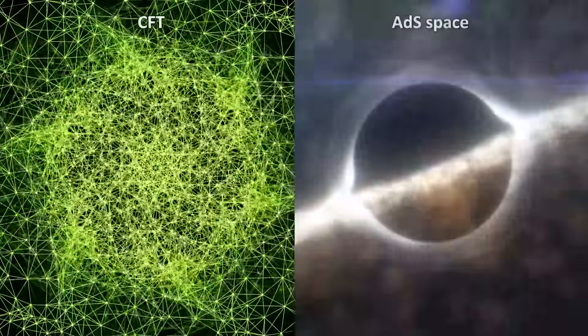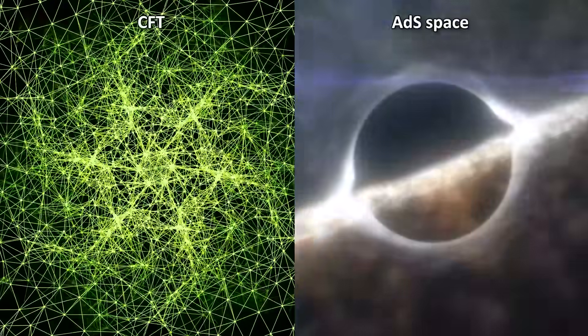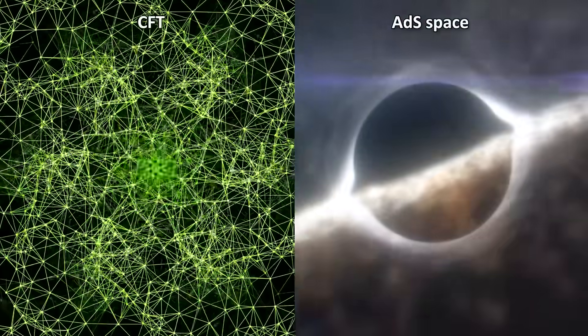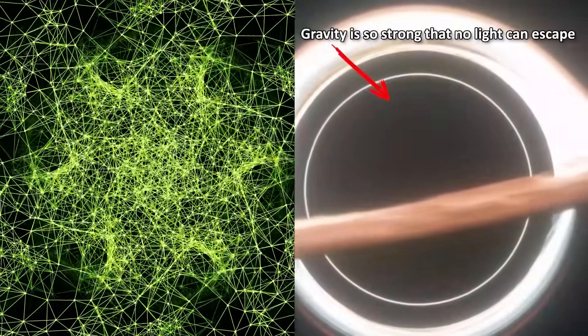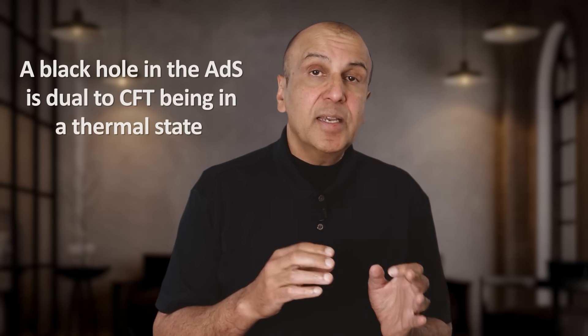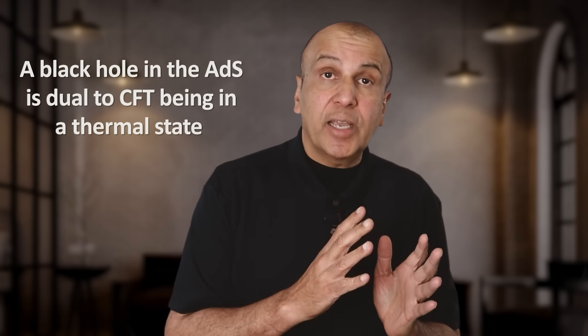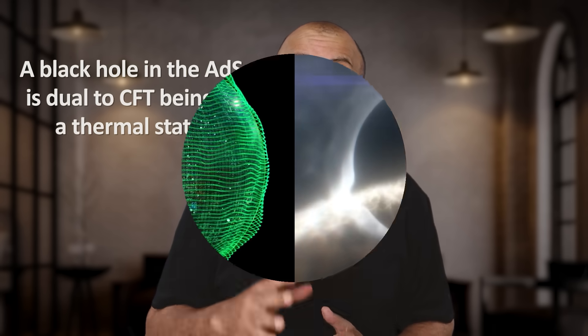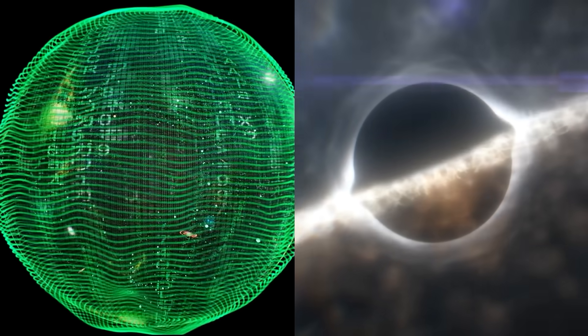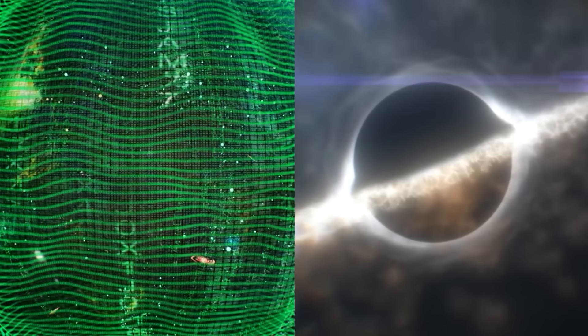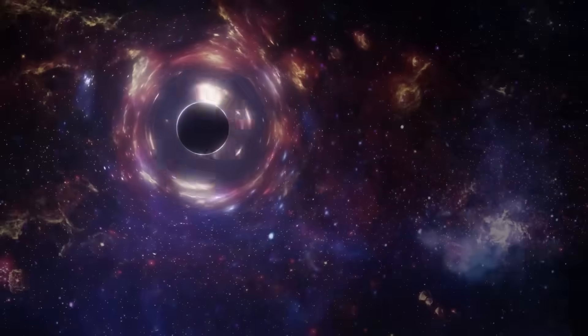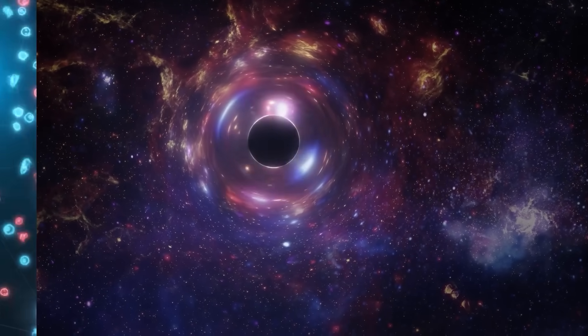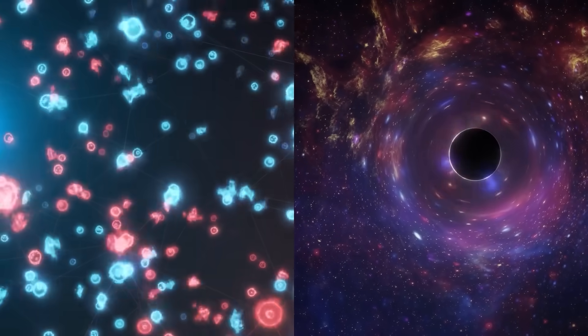In fact, a compelling demonstration of emergent gravity is how black holes in the ADS correspond to certain states of this CFT. A black hole is a region of space-time where gravity is so strong that nothing can escape, including light. That's why it's black. In ADS CFT, a black hole in the bulk ADS is dual to the CFT being in a thermal state, or a kind of hot state with a temperature. This means that features we associate with black holes, its gravity and other properties are reproduced in the non-gravitational physics of the CFT. So what looks like a mysterious gravitational object in the ADS is nothing more than a bunch of quantum particles in a hot soup on the CFT.